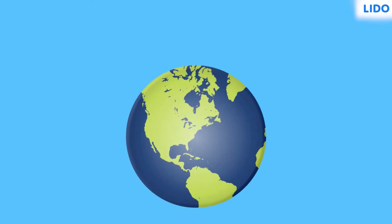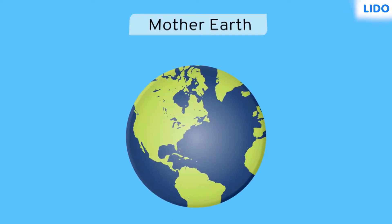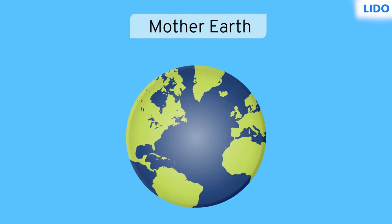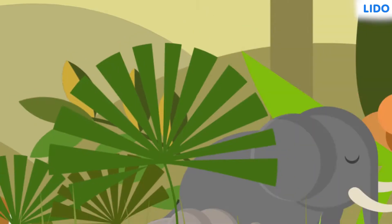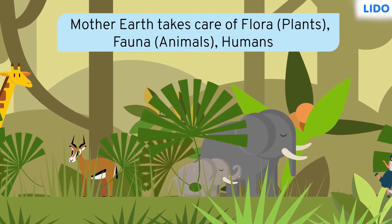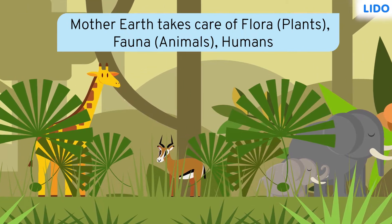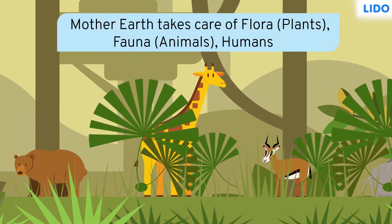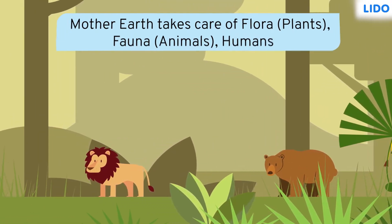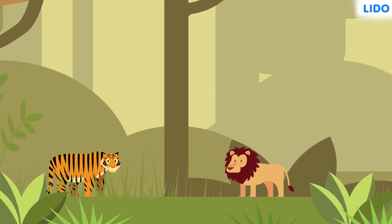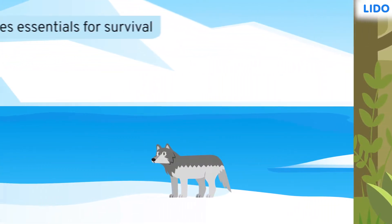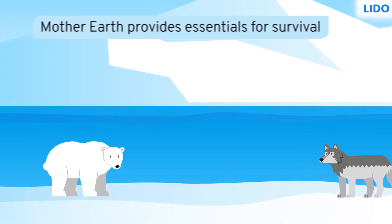Hi there! We call the earth as our Mother Earth. It is so because it is the only place where life is possible. Not only humans but enormous wild animals, flora and fauna exist on earth. Everything is born here and Mother Earth takes care of all. Life exists on earth because all living organisms get the essentials to survive from Mother Earth itself.